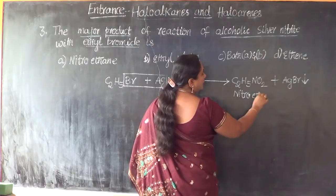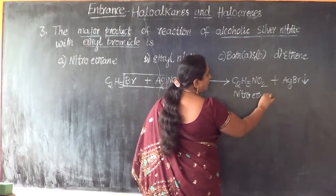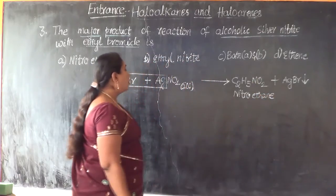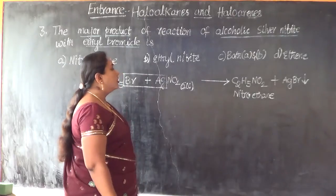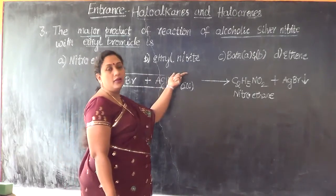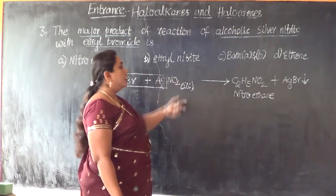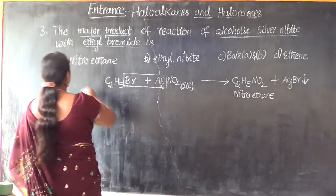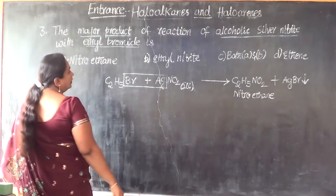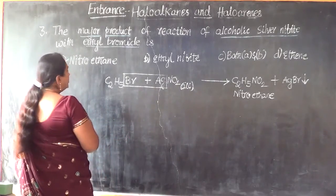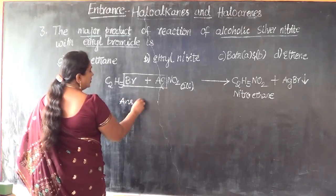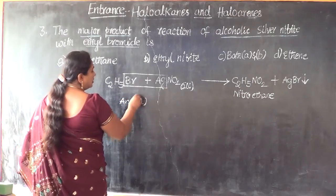The major product will be nitroethane in this case. Nitroethane will be the major product. Though in minor quantity we will also be getting ethyl nitrite. So the answer would be nitroethane — Option A is the correct answer.